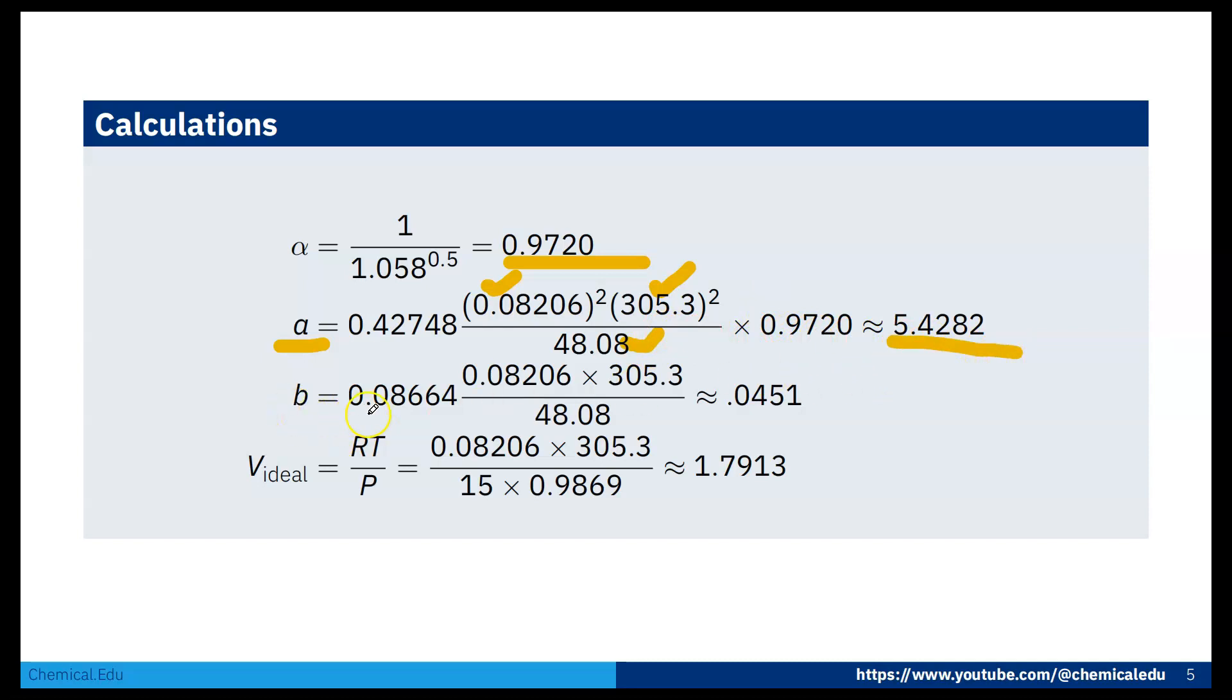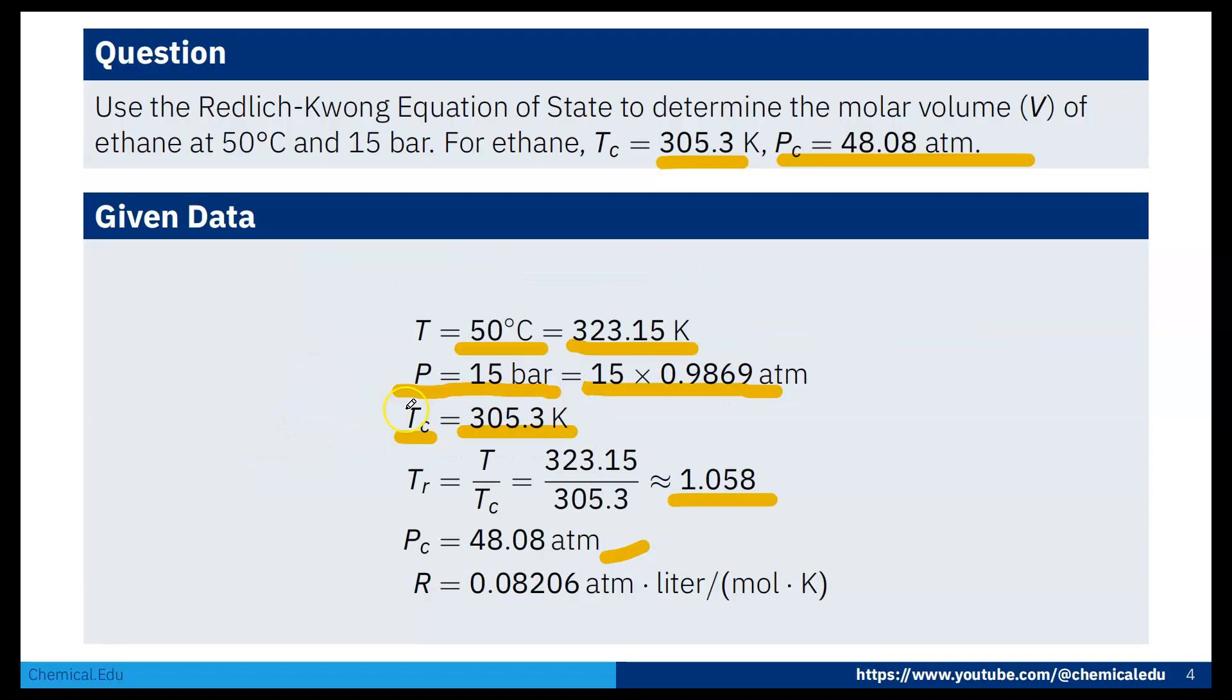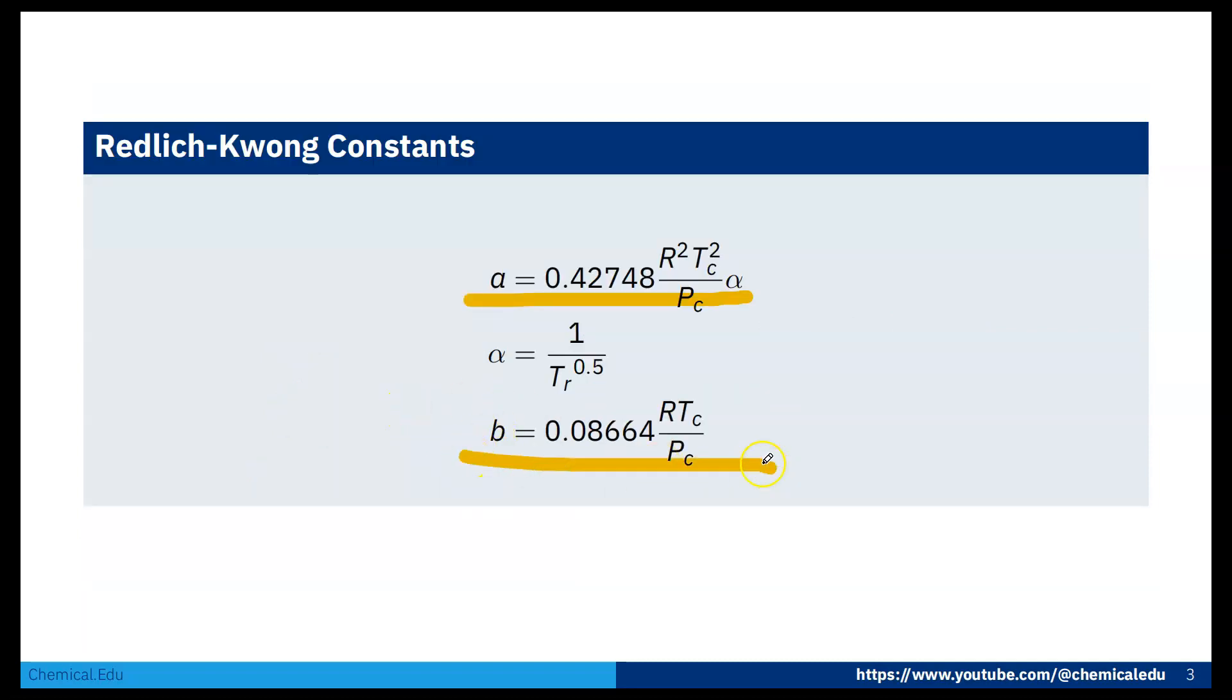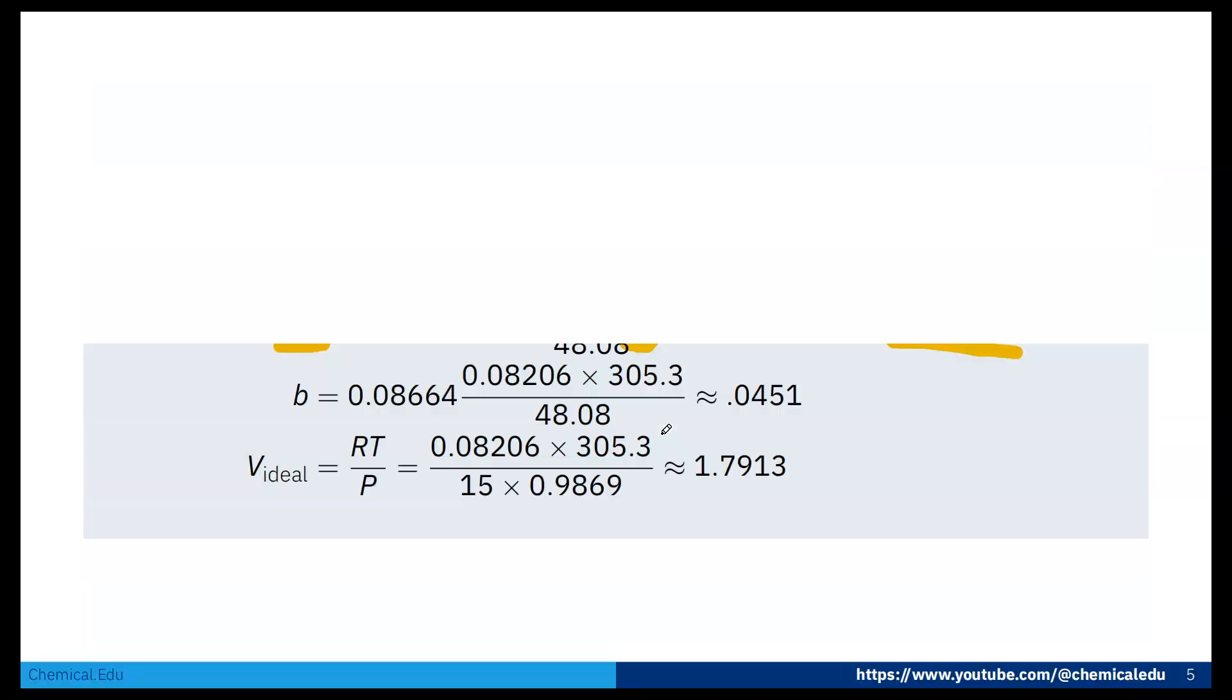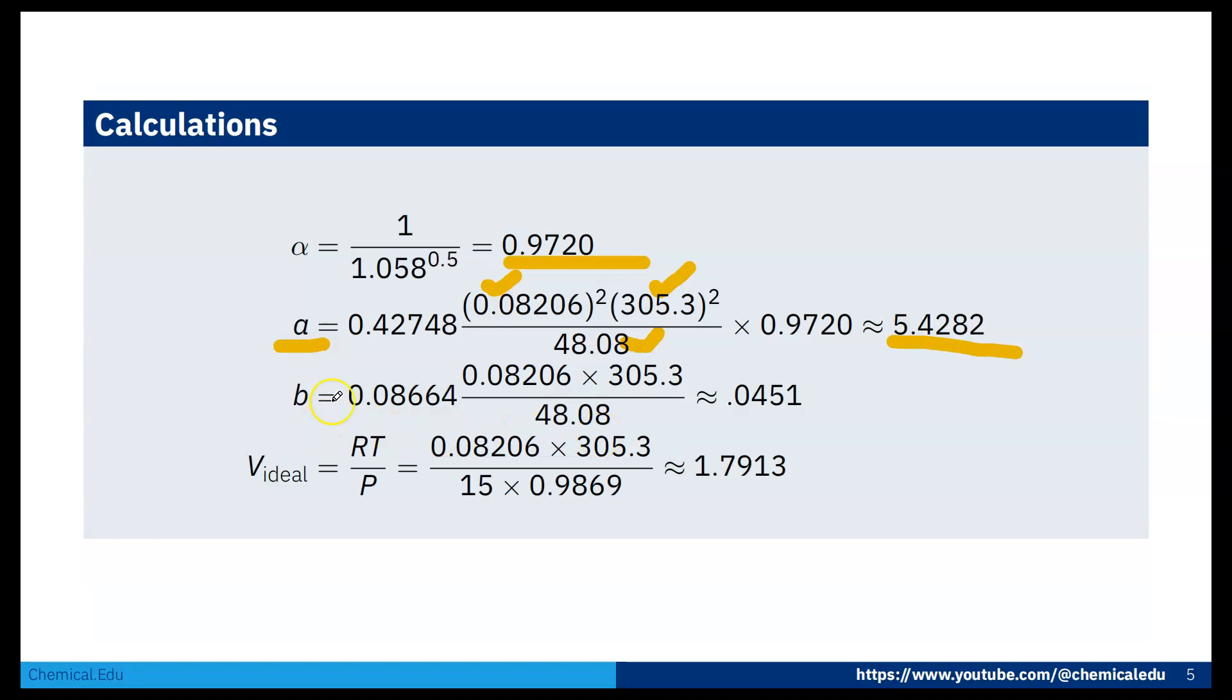For B, using the B formula, B equals 0.08664 times R times Tc over Pc, so that is 0.0451.